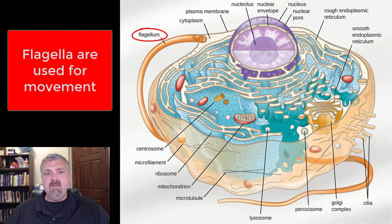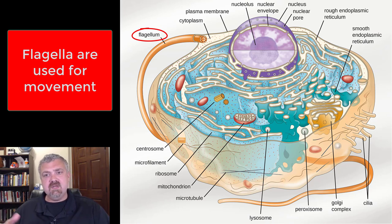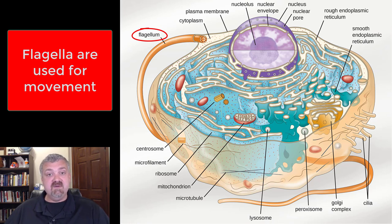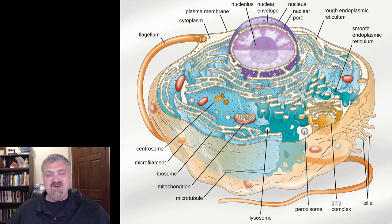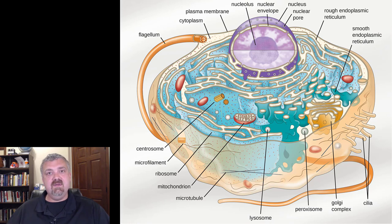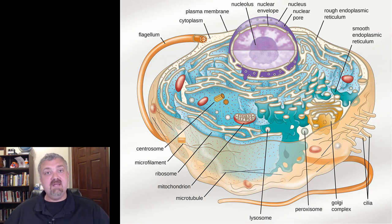Finally, the flagella — a contractile whip-like structure in eukaryotic cells, versus the rotary motor system of bacterial cells. Flagella function is movement. And that covers all the organelles. I'd go through this video a couple of times, and I'll make more detailed videos on the organelles that need it. That's a nice walkthrough of the parts of a eukaryotic cell. Have a wonderful day.